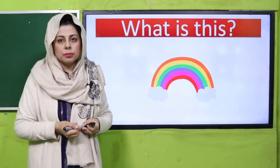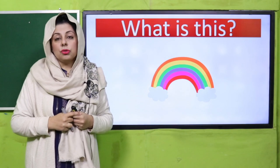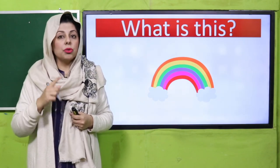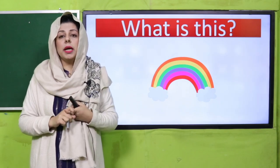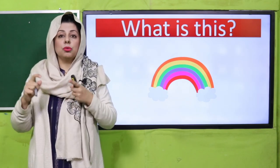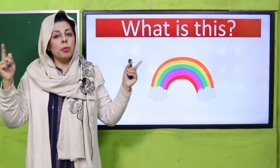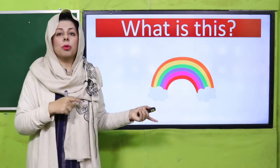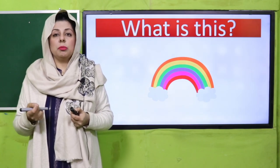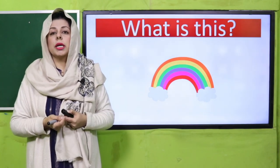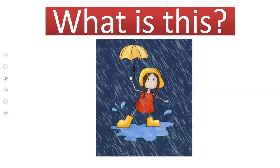Haan iska naam hai rainbow! Yes, so many colors. Do you know how many colors are there in a rainbow? There are seven colors. Humne GK ki book mein rainbow ke baare mein padna hai. Rainbow mein hoti hain seven colors, aur rainbow kaise banti hai? Rainbow banti hai baarish ke baad jab suraj ki kirne aasman pe nikalti hain aur paani mein se guzarti hain — toh rainbow banti hai. Teachers, you can pause and talk about rainbow.